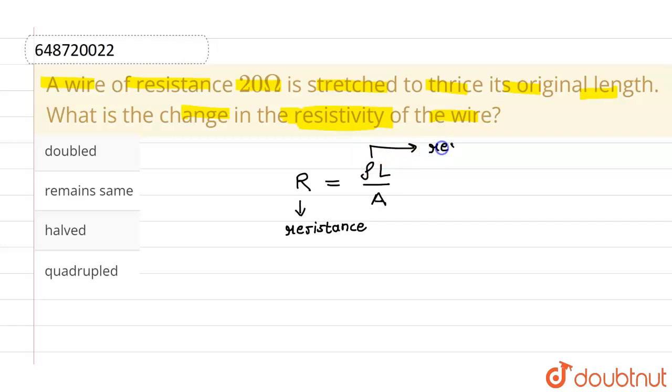Here, ρ is the resistivity, L is the length, and A is the area of cross section of the wire.